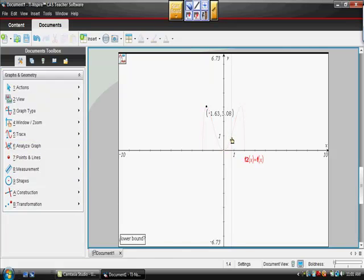I'm going to choose a maximum here. I'm going to choose this value and this one. And as it analyzes it, we have a symmetrical graph with the highest value being 3.08 and the lowest value being zero.